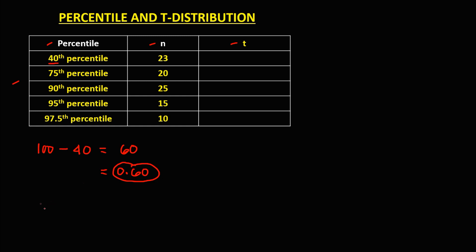Then we need to solve for the degrees of freedom, so that's n minus 1. Since n is the sample size, we have 23 minus 1. Therefore, the degrees of freedom is 22.